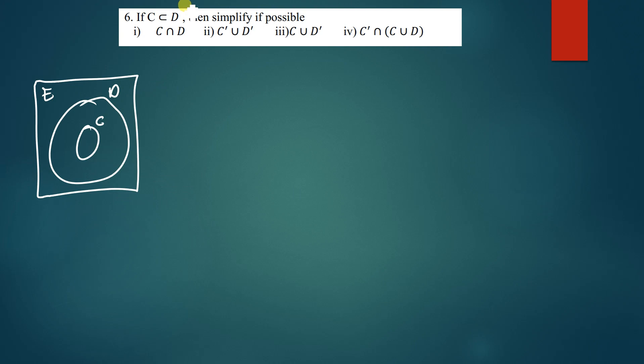So c intersection d is simply just the common elements between set d and set c. But since c is in set d, meaning the common elements that are in d and c are simply just the same set c.